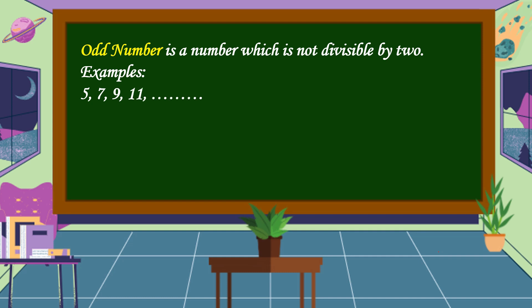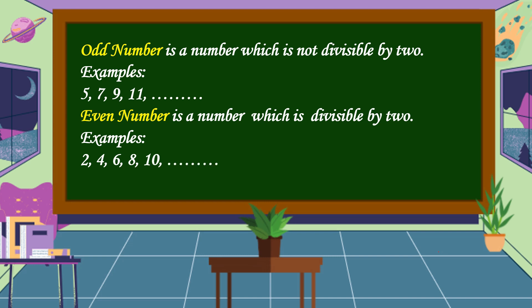What is an even number? Even number is a number which is divisible by 2. For examples, 2, 4, 6, 8, 10, and so on.